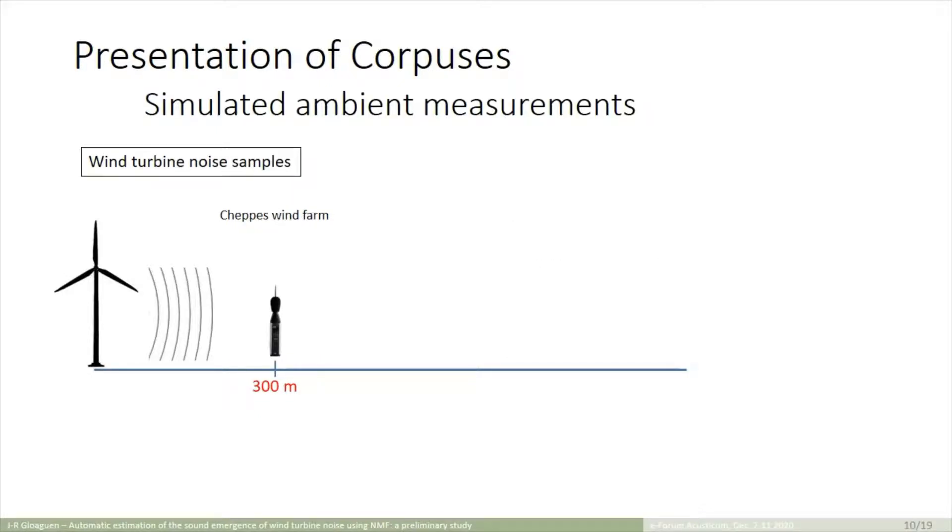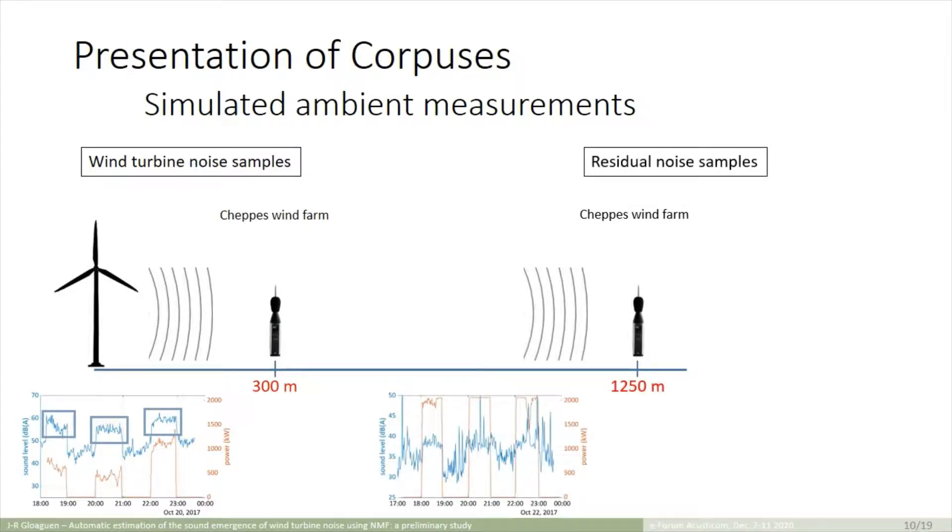For the corpus of ambient noise measurement, instead of considering in-sight measurements, we decided to simulate them in order to have a better control of their composition. The simulation process allows us to know the exact sound emergence, which is not possible in practice. So, to do so, we collected measurements made on the same wind farm, but here at 300 m from the wind turbines, with the most emergent period as possible. The residual noise is captured at a different point during the shutdown of the machine this time. And we also added different punctual residual noise events in order to bring diversity and some dynamics.